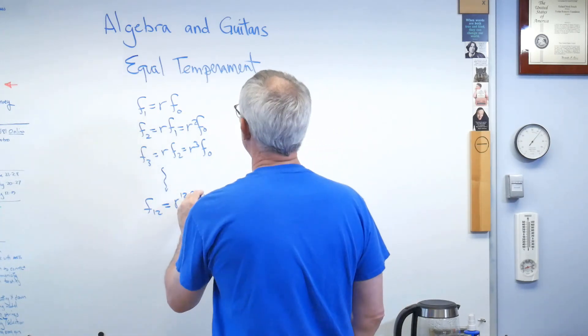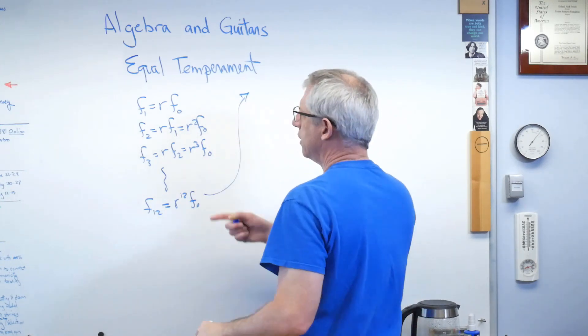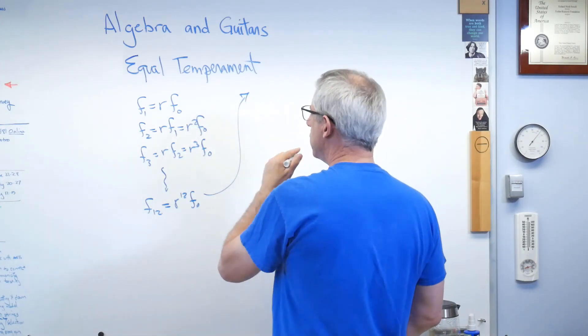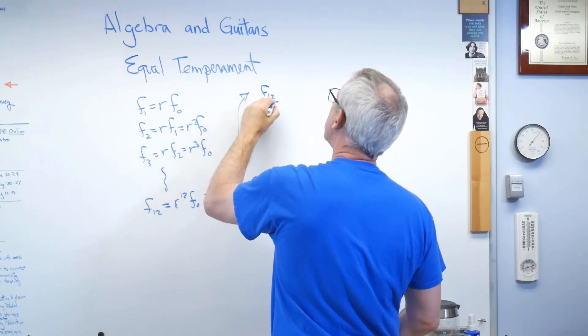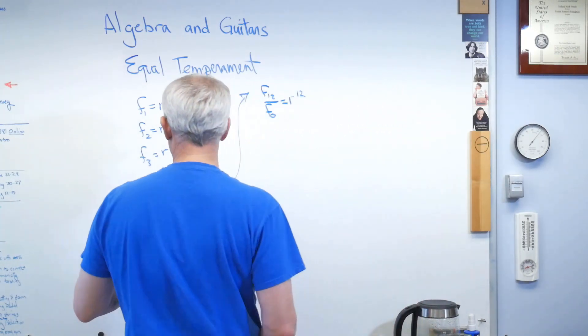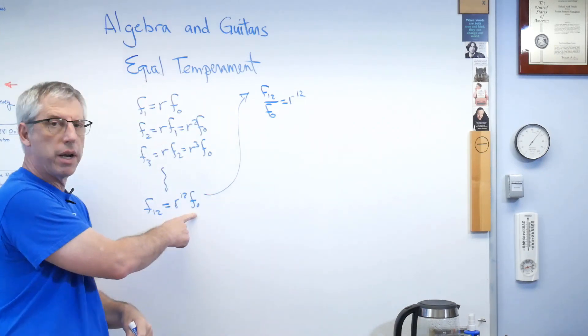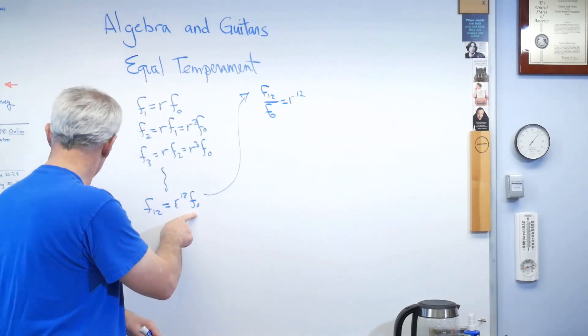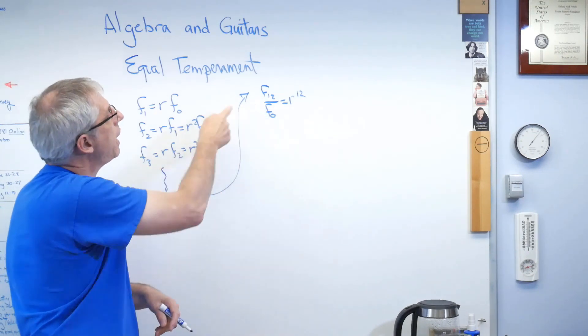Well, let's go back up here. This is looking pretty algebraic, isn't it? Now, let's do this. F12 over F0 is R to the twelfth. Well, that's just this. I just divide it through by F0. I just divide through by F0, and I get that.